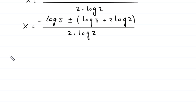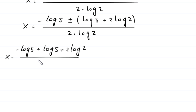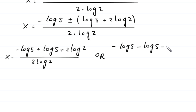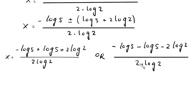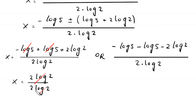Taking the positive case, x equals negative log of 5 plus log of 5 plus 2 times log of 2, divided by 2 times log of 2. The positive log of 5 and negative log of 5 cancel out, leaving x equals 2 times log of 2 divided by 2 times log of 2. These cancel and we get x equals 1. This is the first solution.